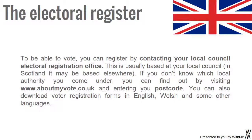The Electoral Register: To be able to vote, you can register by contacting your local council electoral registration office. This is usually based at your local council; in Scotland it may be based elsewhere. If you don't know which local authority you come under, you can find out by visiting www.aboutmyvote.co.uk and entering your postcode.